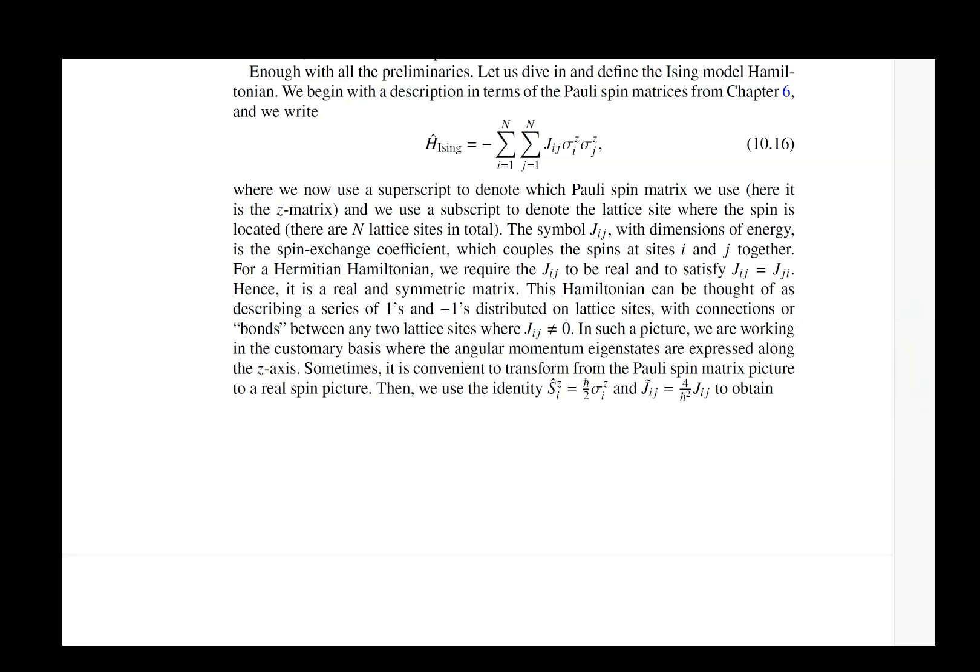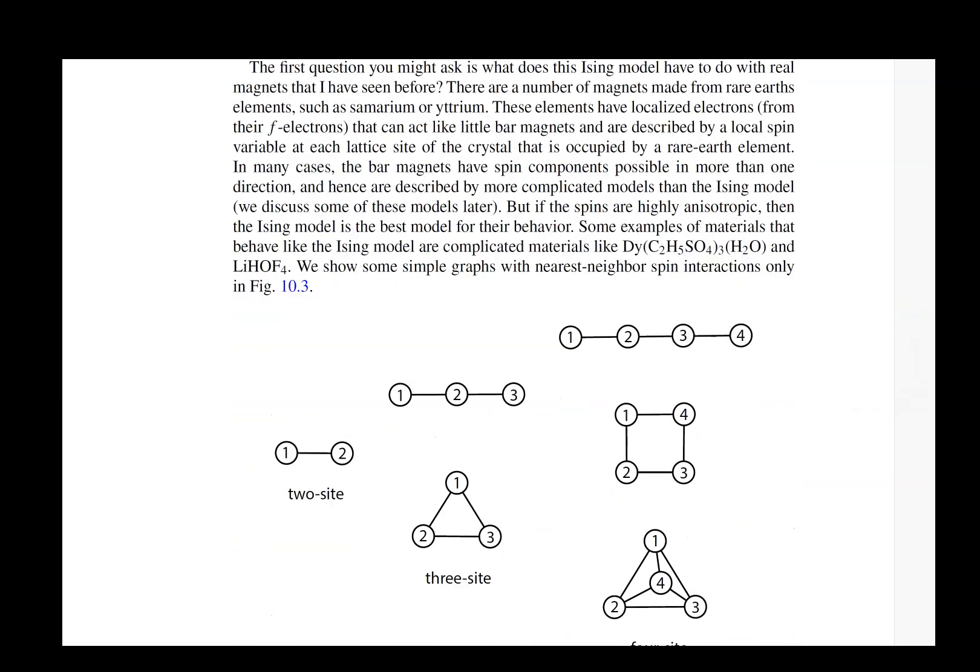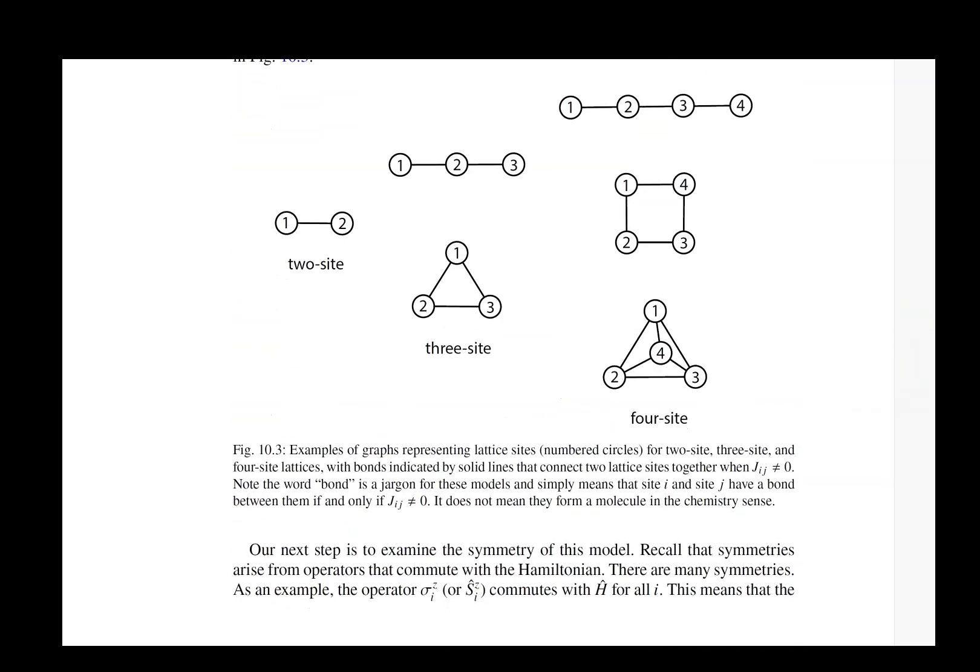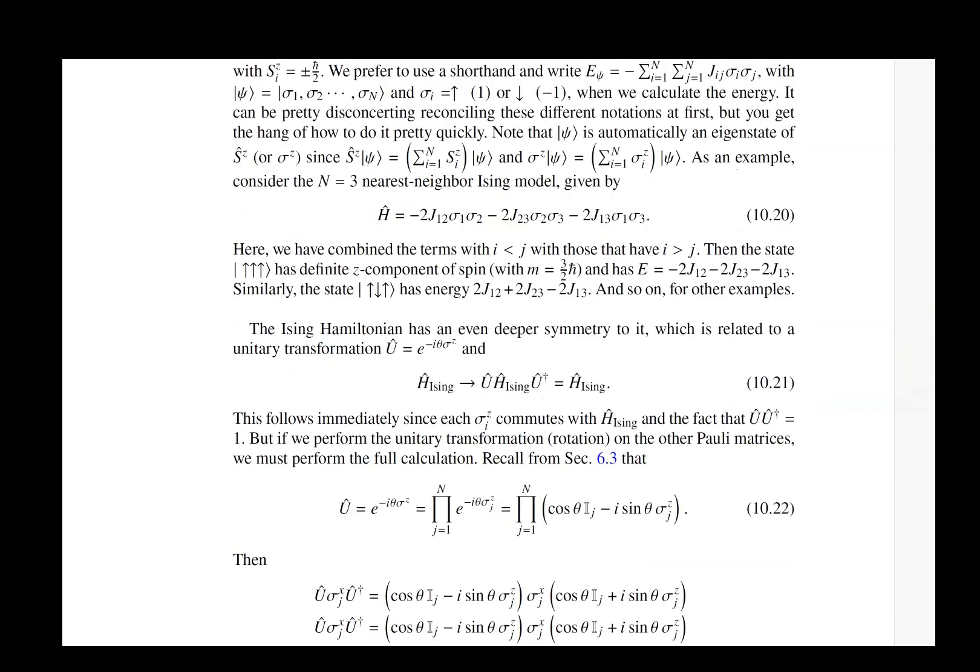Here is the Ising model itself. We have the interaction of the Z component of the spin between what is typically neighboring sites. But you could have long range versions of the Ising model where you're interacting pairs between more distant sites as well. This is an example of some small cluster lattices that we can exactly solve the Ising model on, and we talk about those kinds of solutions in the chapter.